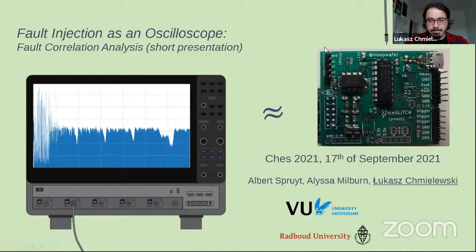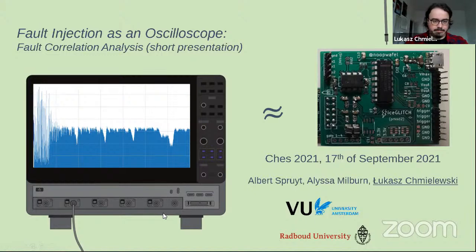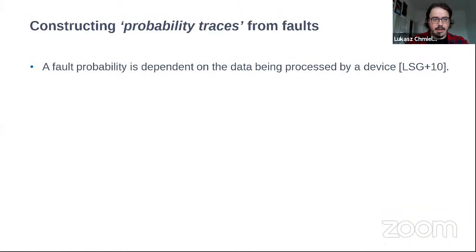Thank you very much. I will talk about fault injection as an oscilloscope for correlation analysis. This is a short version of the presentation. This work was done by Albert Spruijt, Alissa Milburn, and myself, Lukasz Chmielewski. On the left side we see an oscilloscope, a common tool for side-channel analysis, and on the right side we see our fault injection tool. On the oscilloscope screen we see some traces — presumably side-channel traces from power analysis — and we will see how we can achieve similar traces using fault injection.